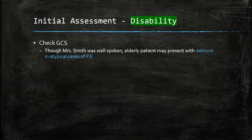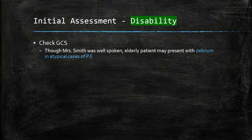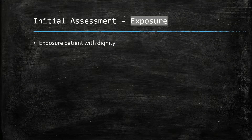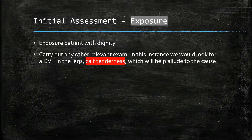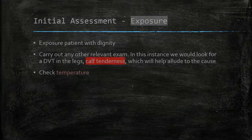Disability: we check the GCS. A point to note is that an elderly patient may present with delirium in atypical cases of PE, so please keep an eye out for this. At this stage we carry out an examination — notably we look for calf tenderness, which will help allude to the cause of the PE. We also check the temperature.